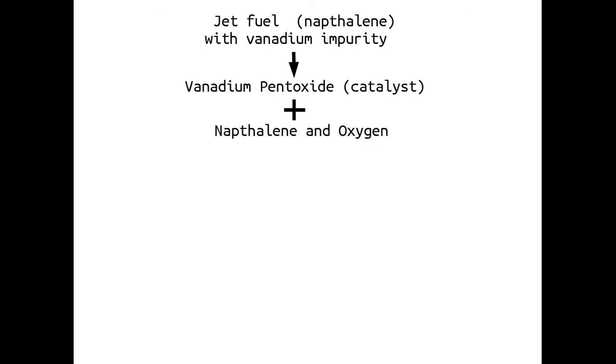First, we start with jet fuel which contains naphthalene and a vanadium impurity. As it burns, the vanadium is turned into vanadium pentoxide which is the catalyst. It's added to the naphthalene and oxygen in the air and in the fuel producing phthalic anhydride. And this is well known, a very common industrial chemical reaction.